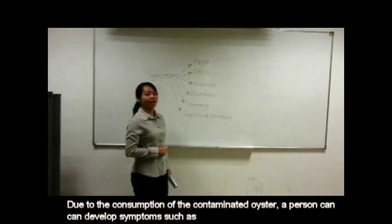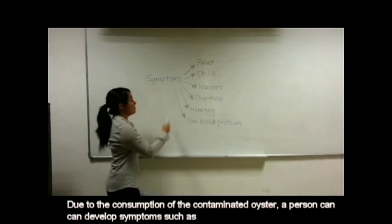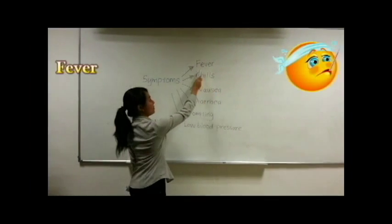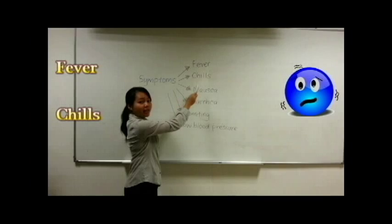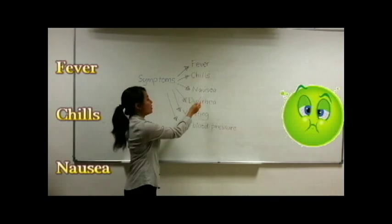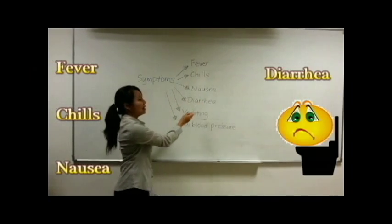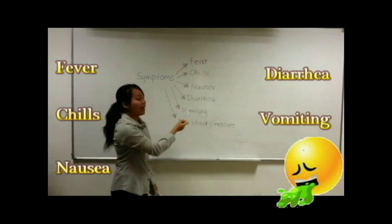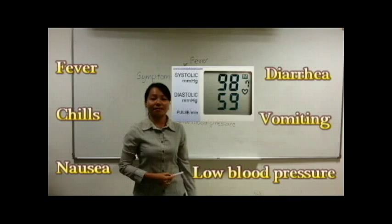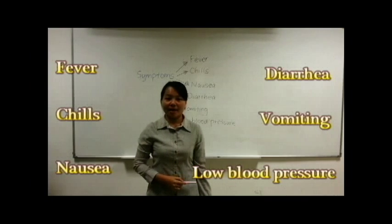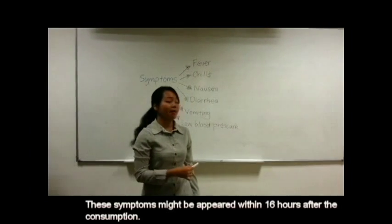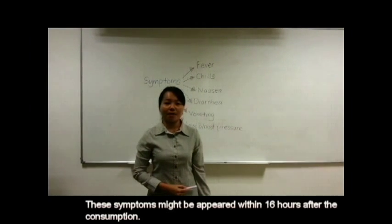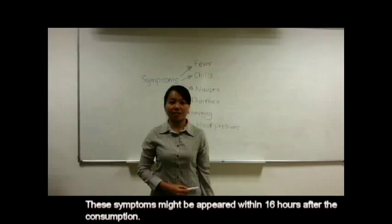Due to the consumption of contaminated oyster, a person can develop symptoms such as fever, chills, nausea, diarrhea, vomiting, and low blood pressure. These symptoms might appear within 16 hours after consumption.